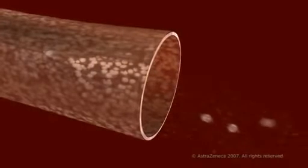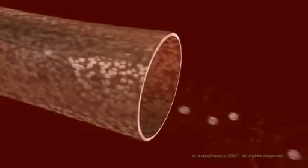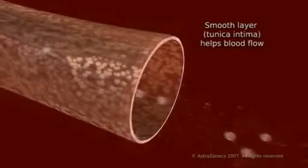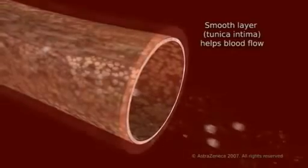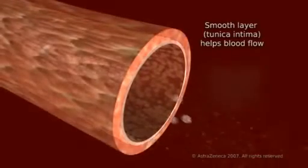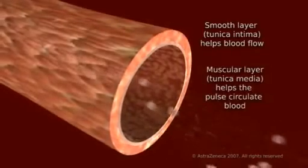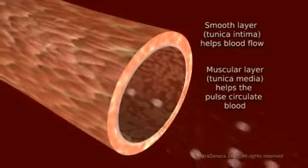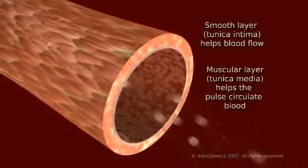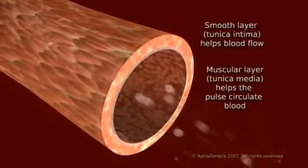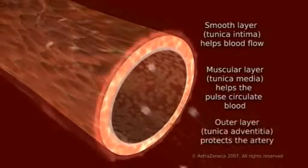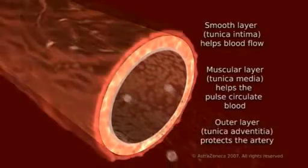A normal artery wall consists of three main layers: a thin, smooth layer that lines the inside of the artery to help blood flow; a muscular, elastic layer that helps the artery pulse to push blood around the body; and a tough outer layer to protect the artery.